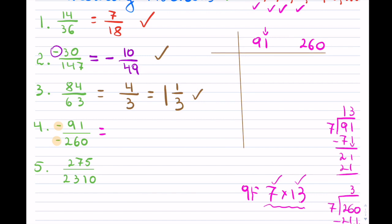I did come up with something useful though: 91 equals 7 times 13, so I can check whether 13 works. 13 goes into 91 seven times, and 13 goes into 260 twenty times. So I reduce by 13, giving me 7 over 20. Since 7 is prime and does not go into 20, I must stop. The answer is positive 7 over 20.